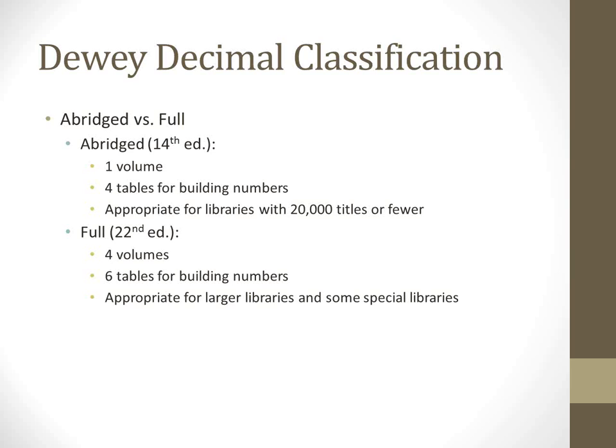Here is an overview of the current form of Dewey Decimal Classification. There are two versions: abridged versus full. Abridged is just what it sounds like - it's a shorter version that doesn't go into as much depth. The print version is just one volume. It only has four tables for building numbers, so the numbers are not as long or involved as they are with full Dewey.